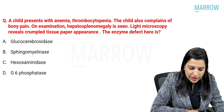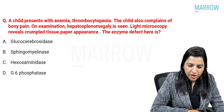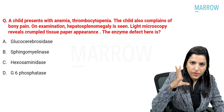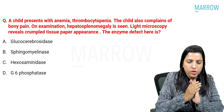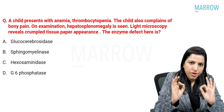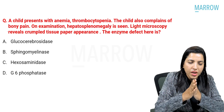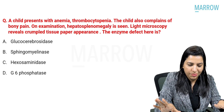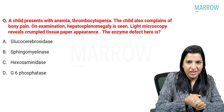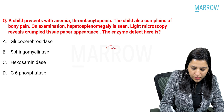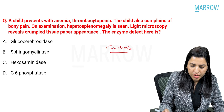A child presented with anemia, thrombocytopenia, and also complains of bony pain. That itself gives a picture of Gaucher's disease. Hepatosplenomegaly is seen, and light microscopy revealed a crumpled tissue paper appearance. It's very difficult to find any question paper without the crumpled tissue paper appearance. So here also we are getting the same question — it is a case of Gaucher's disease, which is the most common lysosomal storage disorder.